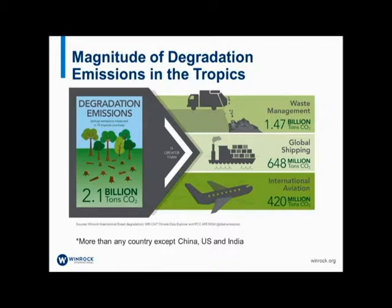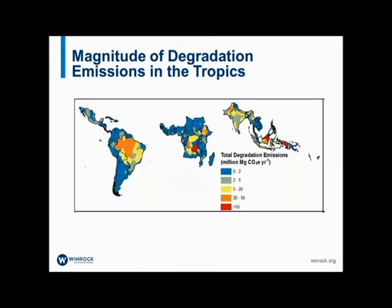This was across 74 pan-tropical countries. The figure was 2.1 billion tons of carbon dioxide per year. To compare: waste management globally accounts for 1.47 billion tons CO₂, and global shipping and international aviation — both areas of current policy focus — are both significantly less than emissions from forest degradation. On a country level, that 2.1 billion tons per year is more than any country except China, the US, and India.